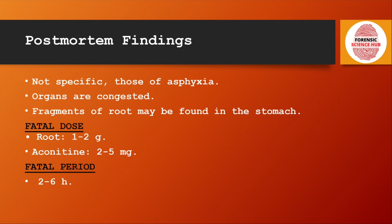Post-mortem findings are not very specific and are generally related to asphyxia — the findings seen in asphyxia cases are also seen in Aconite poisoning. Organs are generally found to be congested, and fragments of root may be found in the stomach.